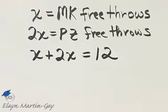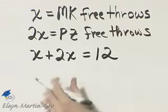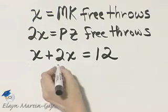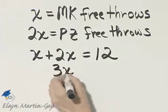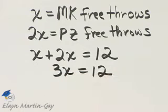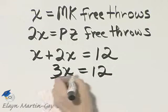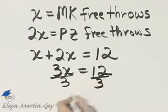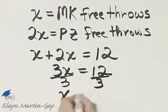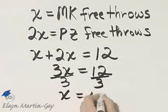Now let's move on and solve this equation. I have a few like terms there, so that's 3X is equal to 12. And then we divide both sides by the coefficient of X, which is 3, and we have that X is 4.